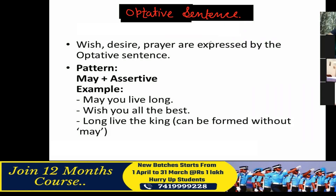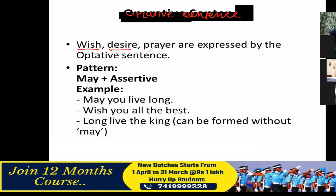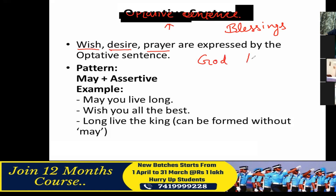The next type of sentence is an optative sentence. Optative sentences are used for showing prayer, desire, or wish. When we want to give blessings to someone, those sentences are called optative sentences. For example, 'God bless you' — that is an optative sentence, because we are giving blessings to someone.